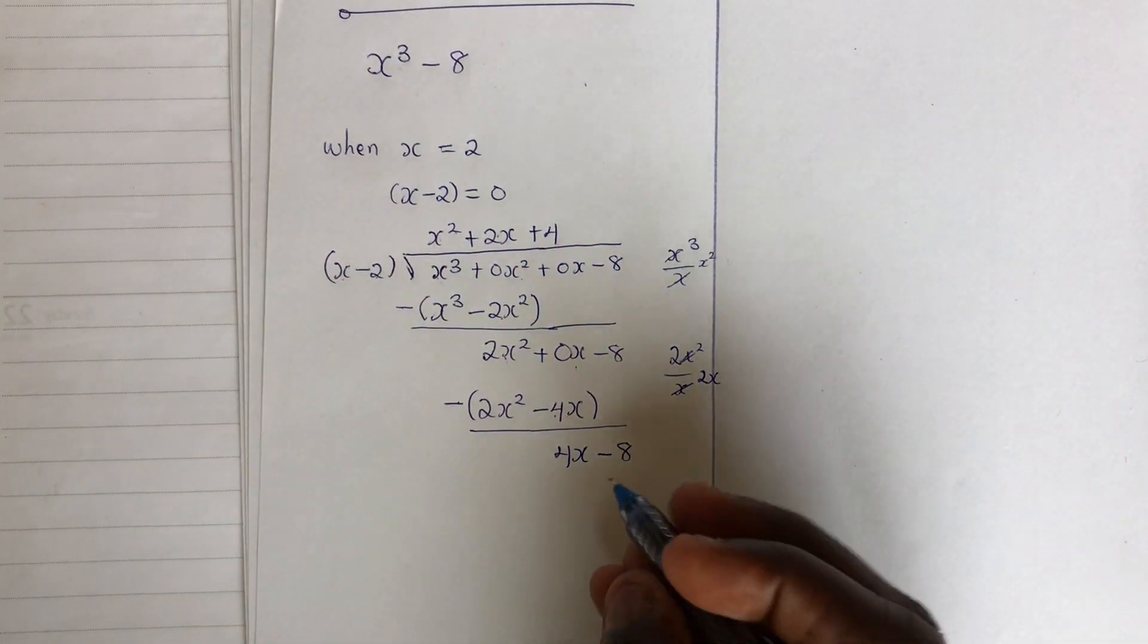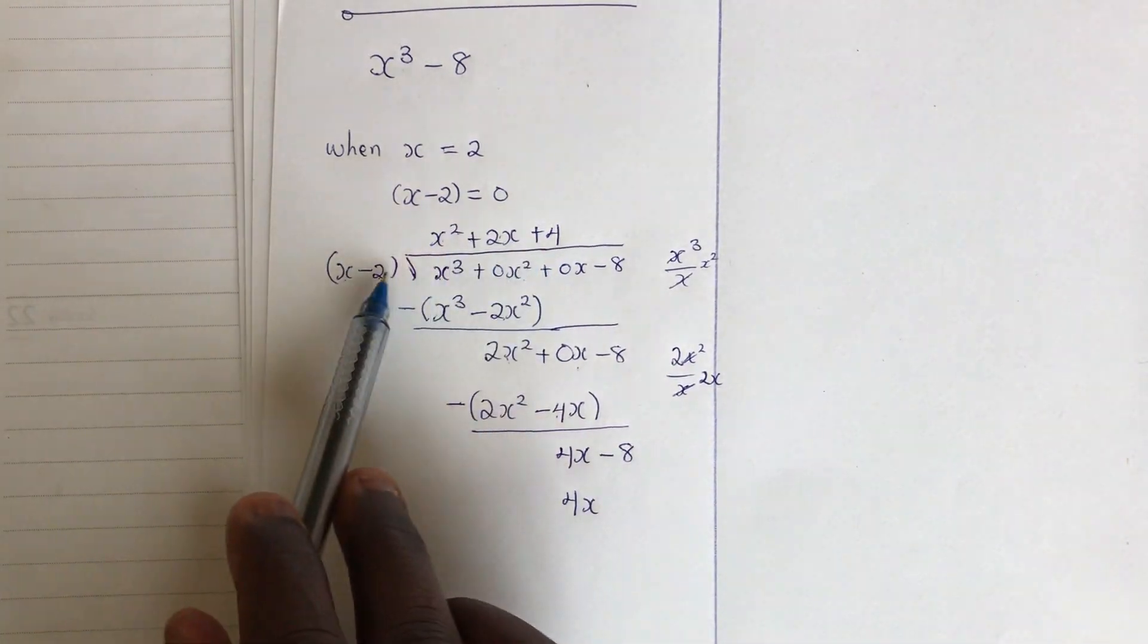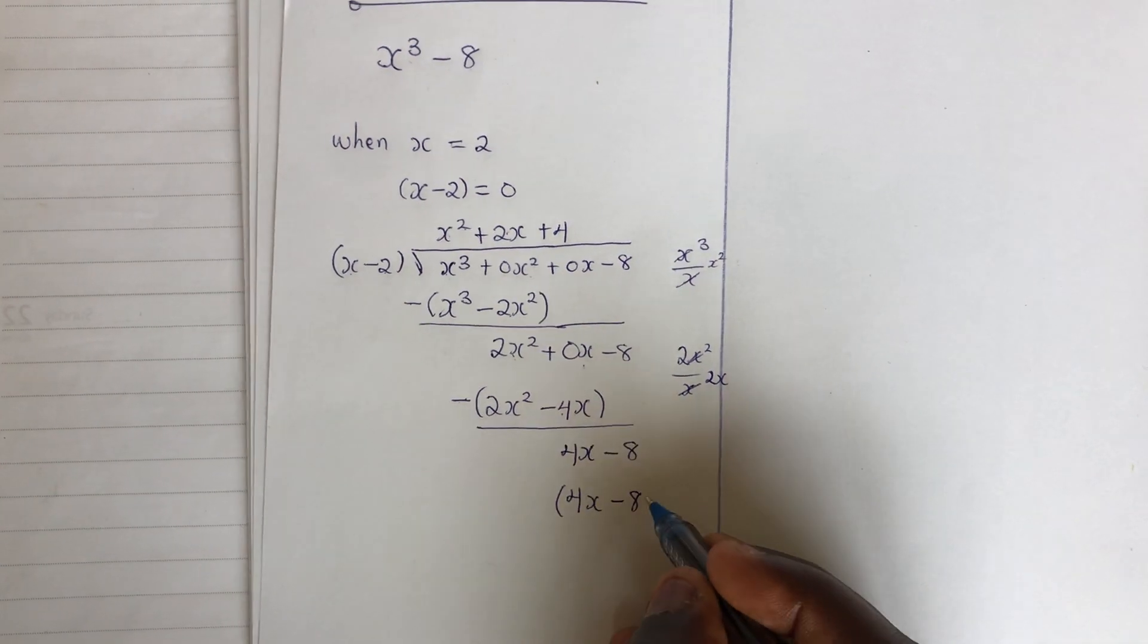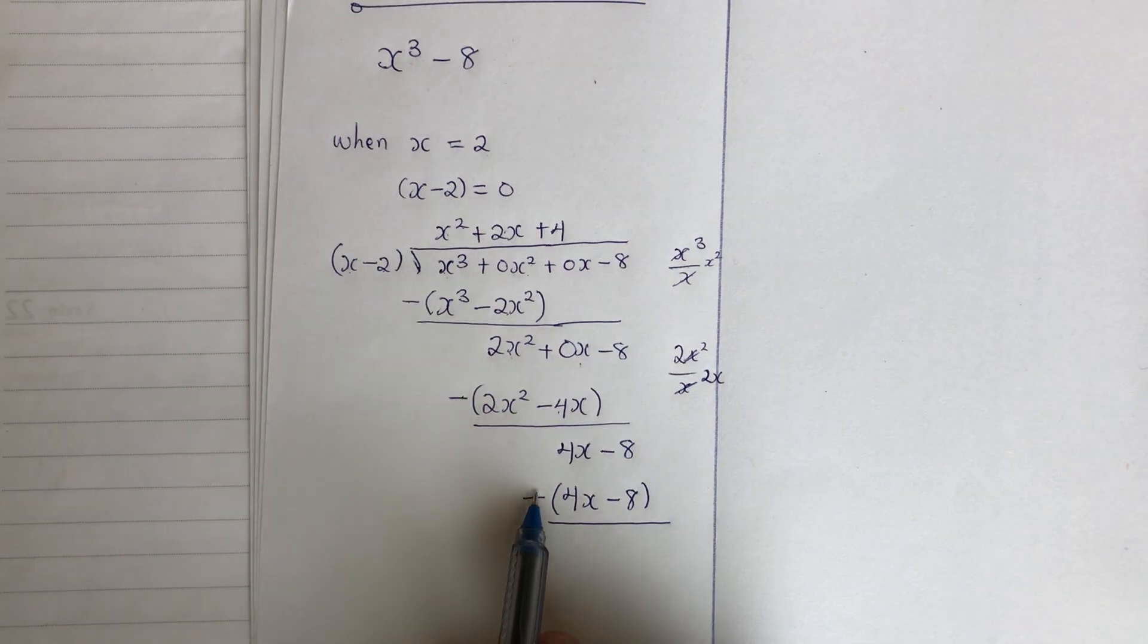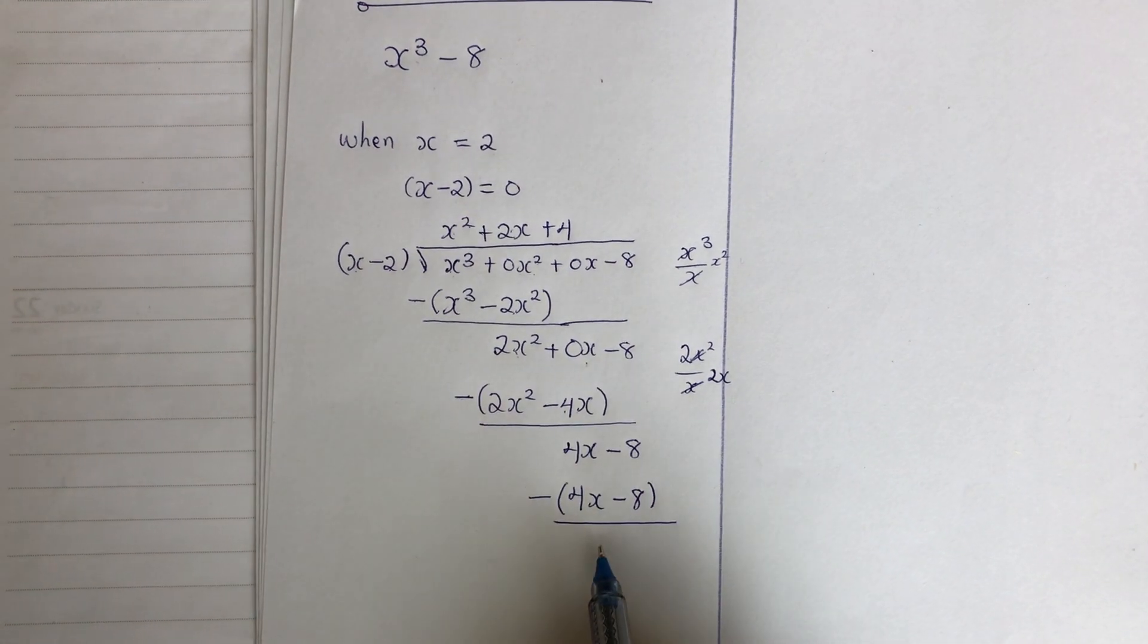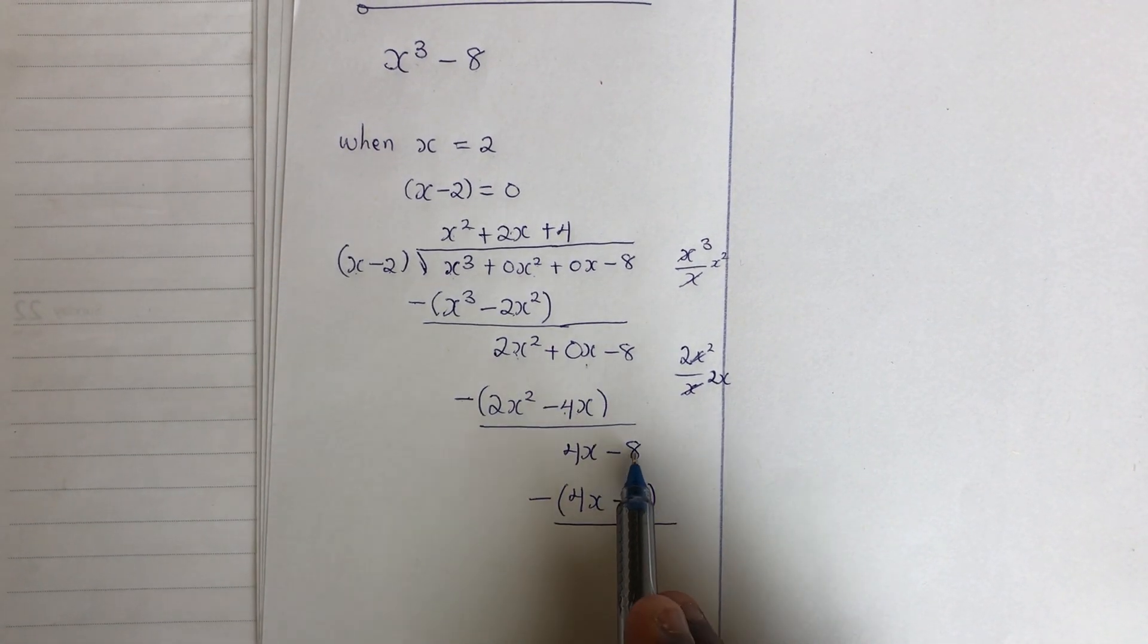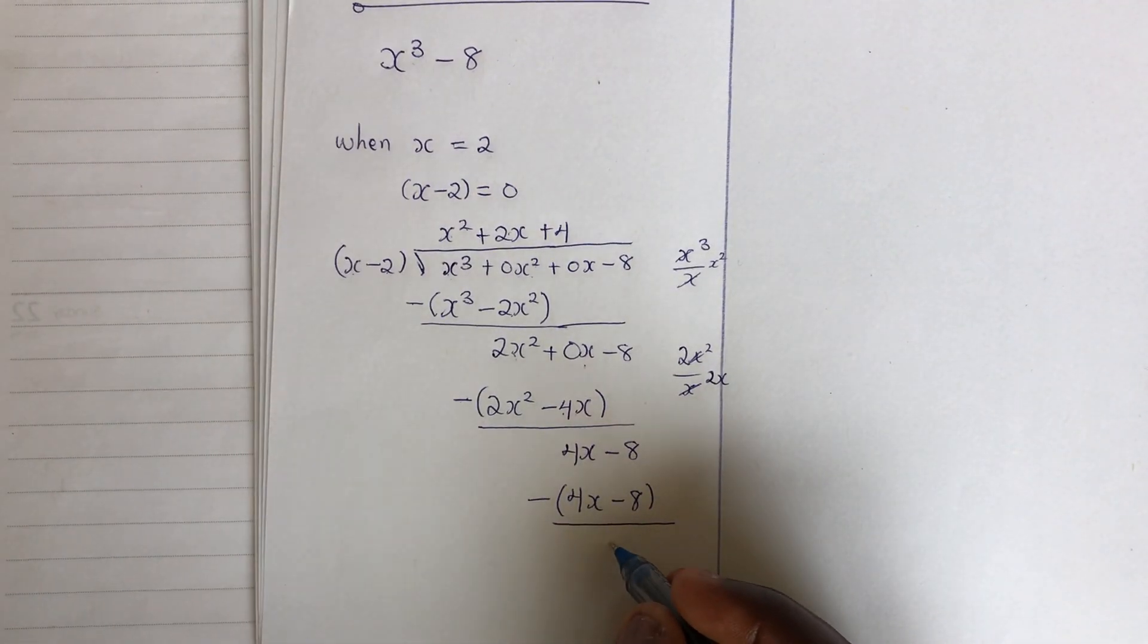4 times x will give me 4x. 4 times negative 2 is giving me minus 8. Put this into brackets. Underline it and subtract. Negative times this, minus 4x. When you add it to this, you are getting 0. This times this will give me 8. 8 plus this, we are getting 0. So the remainder is 0.